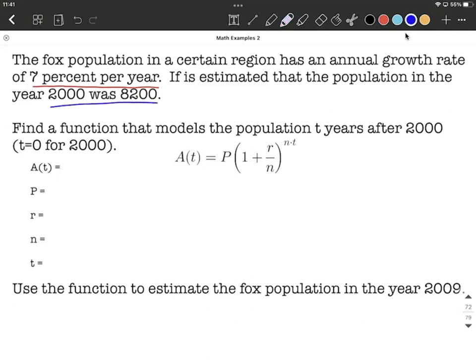We want to find some function that models the population t years after 2000. In this case, we are treating t equals 0 as the year 2000. If you used 1 for t, that would mean the year 2001, and so on.